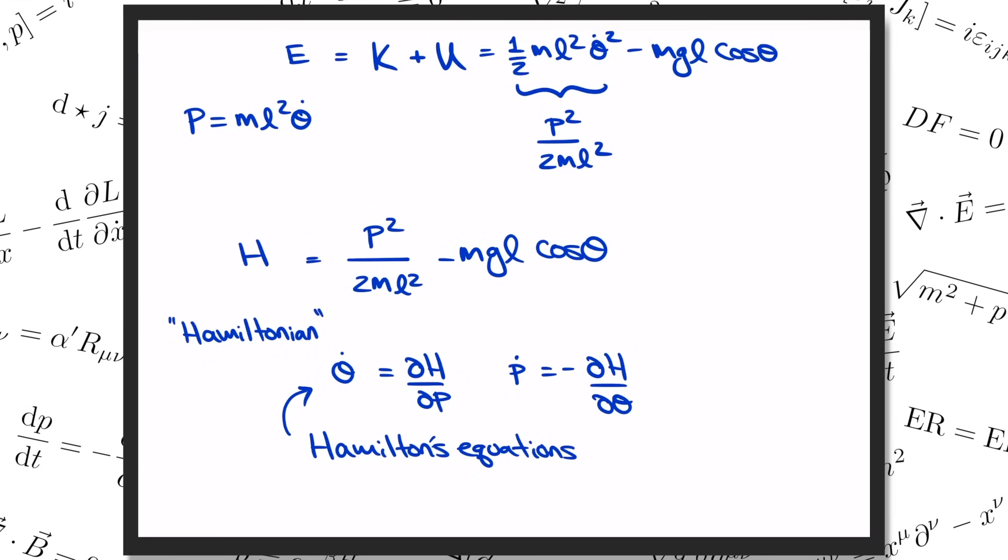By the way, it's important to mention here that while the Hamiltonian was just the total energy in this simple example, that's not always necessarily the case. So let me give you the completely general definition before we move on. Remember that the momentum p was defined as the derivative of L with respect to the velocity. The Hamiltonian is defined by taking p times the velocity and then subtracting L. And then as before, you replace all the theta dots with p's.